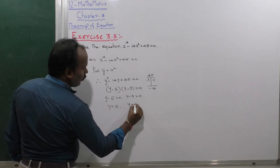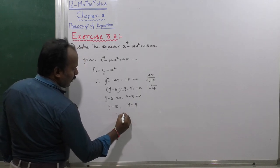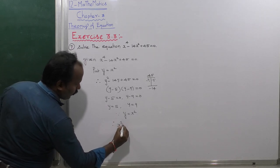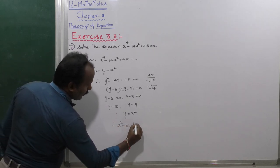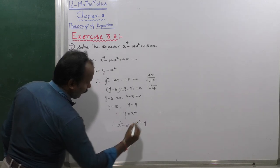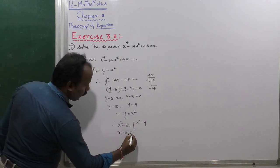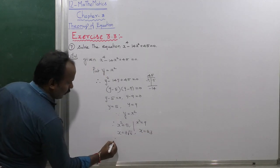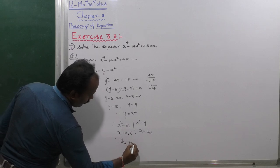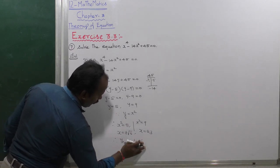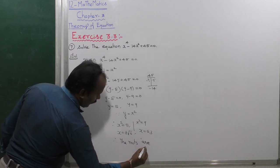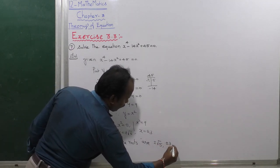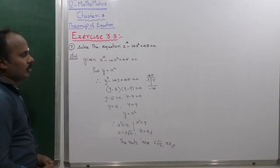Therefore y minus 5 is equal to 0 gives y equal to 5, and y minus 9 is equal to 0 gives y equal to 9. Since y equals x square, x square equals 5 gives x equal to plus or minus root 5, and x square equals 9 gives x equal to plus or minus 3. The four roots are plus or minus root 5 and plus or minus 3.